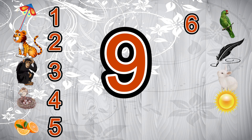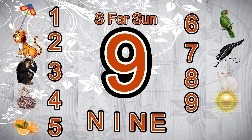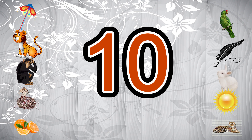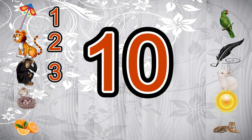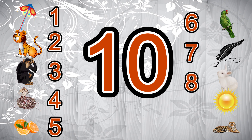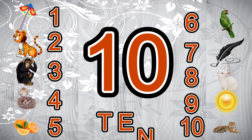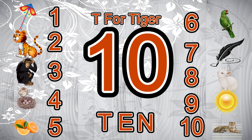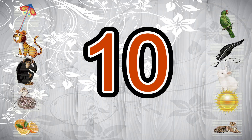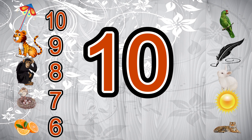9 - 1, 2, 3, 4, 5, 6, 7, 8, 9 - N, I, N, E - 9. S for sun. 10 - 1, 2, 3, 4, 5, 6, 7, 8, 9, 10 - T, E, N - 10. T for tiger. Countdown: 10, 9, 8, 7, 6, 5, 4, 3, 2, 1.